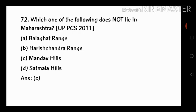Next question is number 72: which one of the following does not lie in Maharashtra? The options are the Pahar Range, Bala Ghat Range, Harish Sandro Range, Mahadev Hills, and Satmala Hills. The answer is C — Mahadev Hills. This is from the PCS exam in 2011, so it is a very important question.